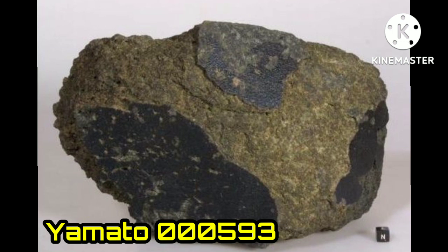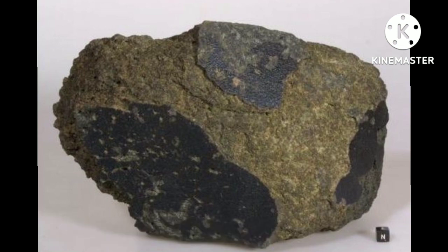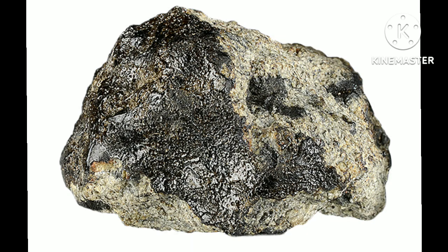Yamato 000593 is the second largest meteorite from Mars found on Earth. Studies suggest the Martian meteorite was formed about 1.3 billion years ago from a lava flow on Mars. An impact occurred on Mars about 11 million years ago and ejected the meteorite from the Martian surface into space.